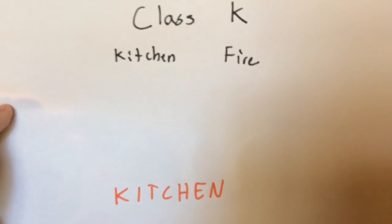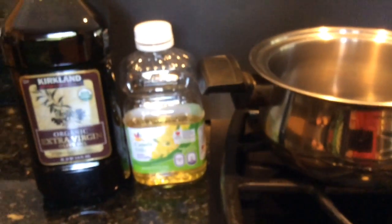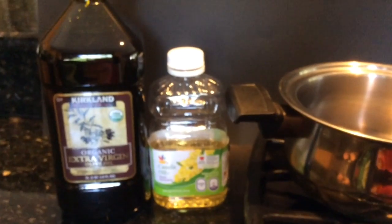The next classifier is Class K. These are kitchen fires, usually found in restaurant kitchens because they use newer appliances and better oils like canola oil or olive oil.